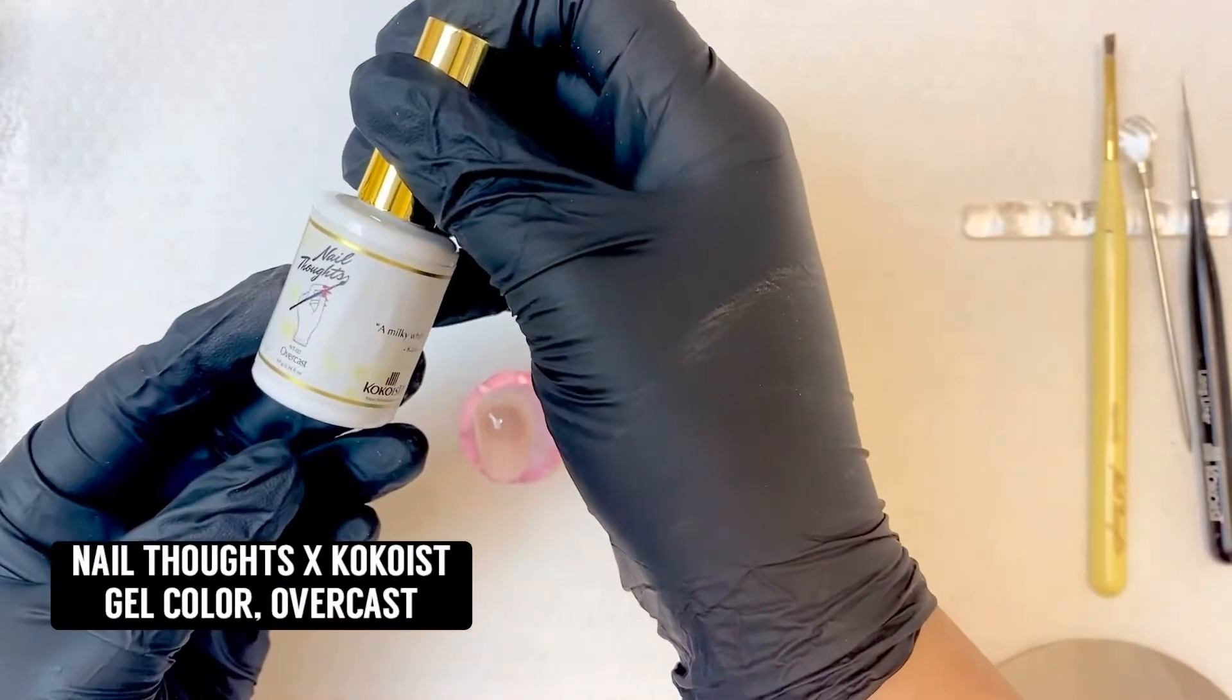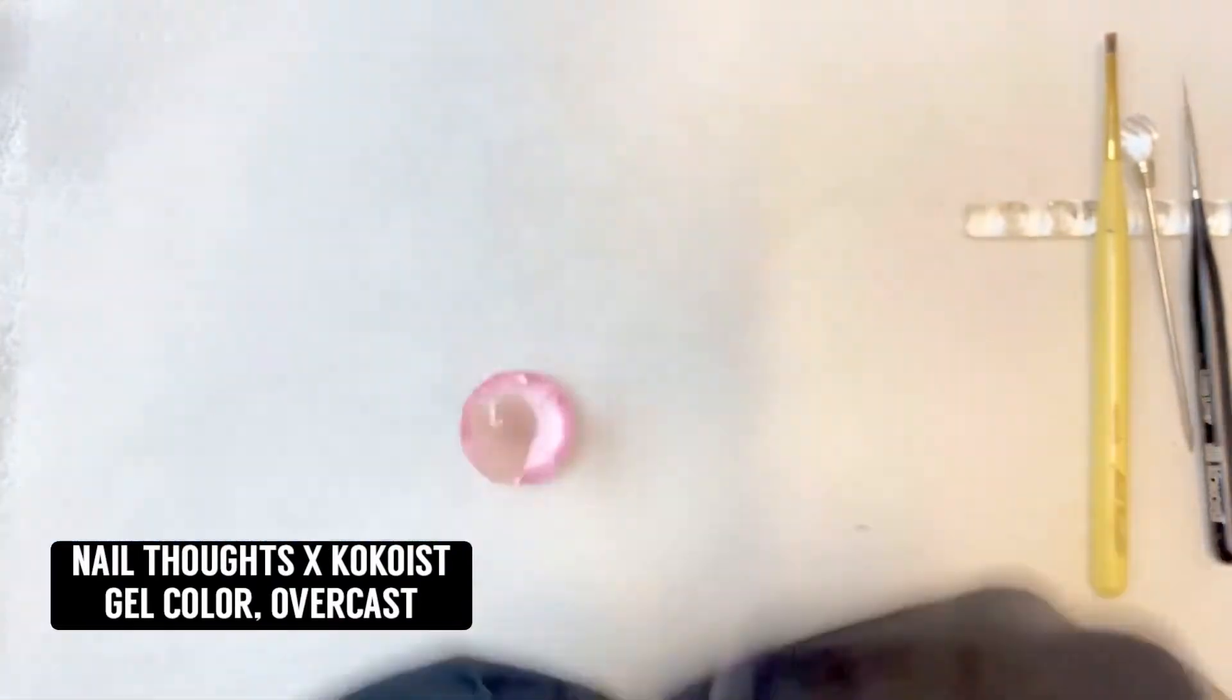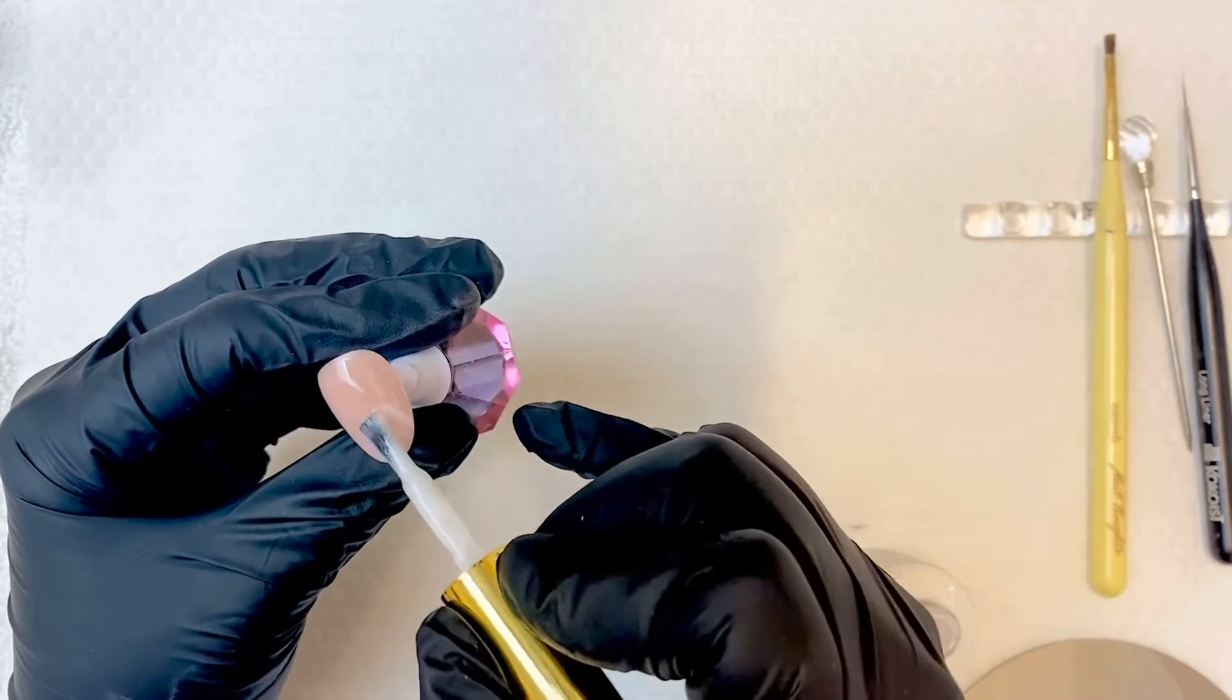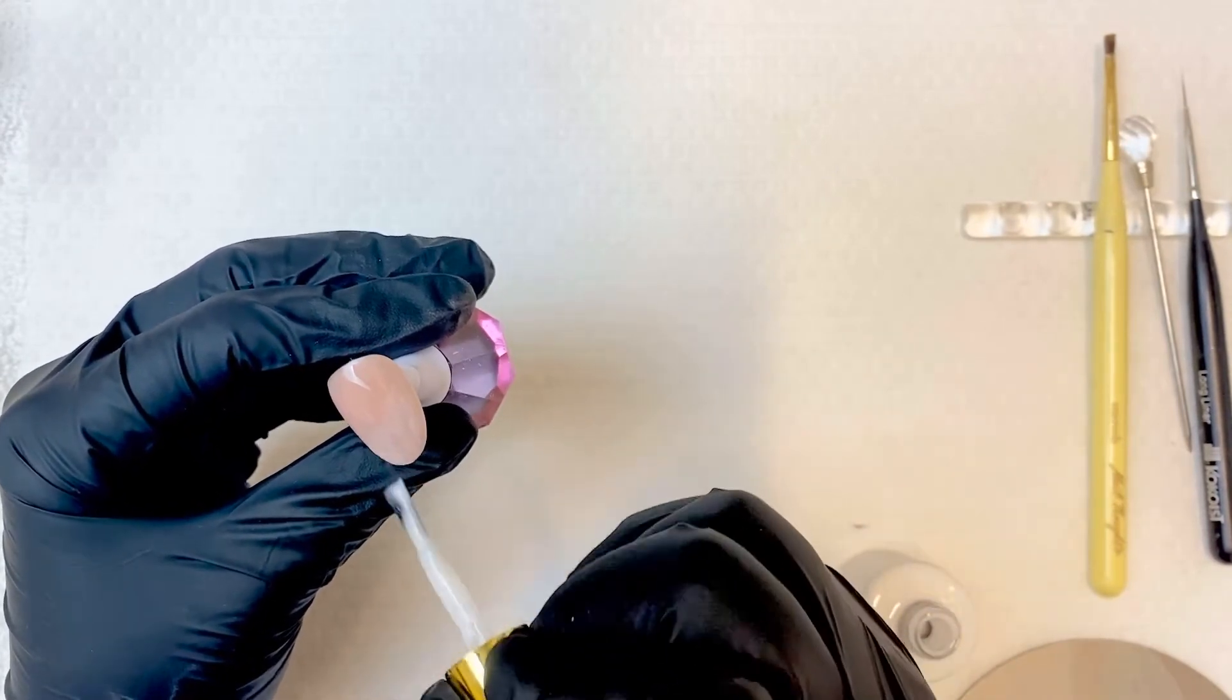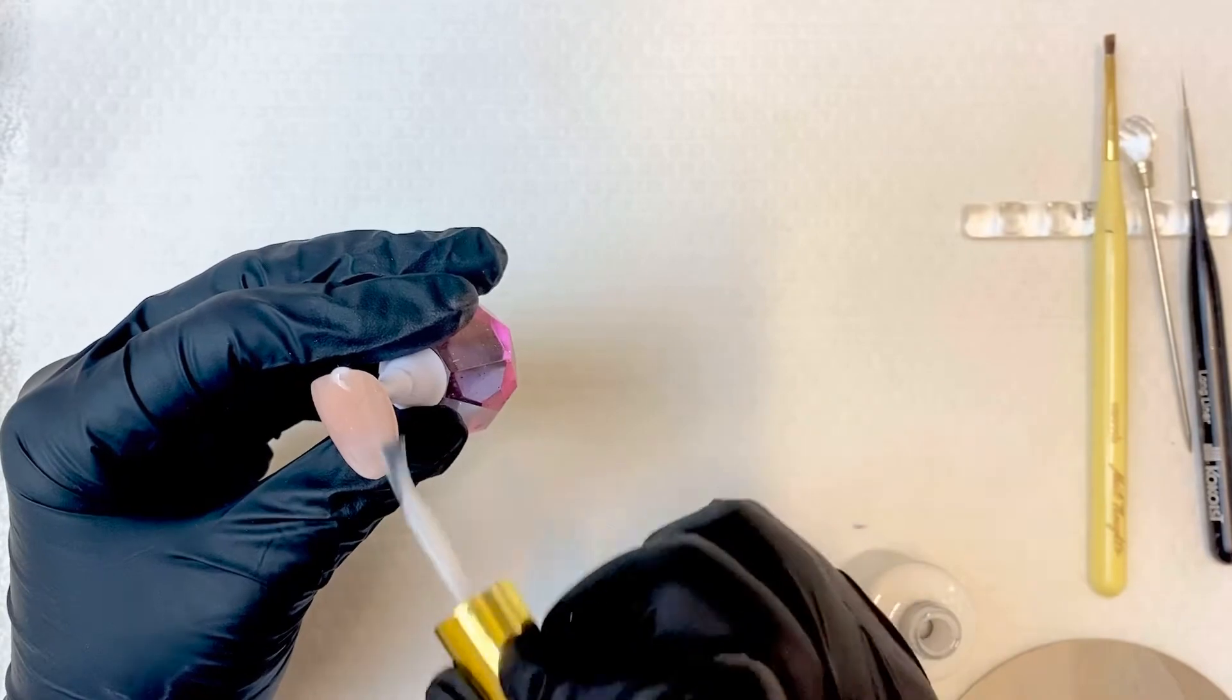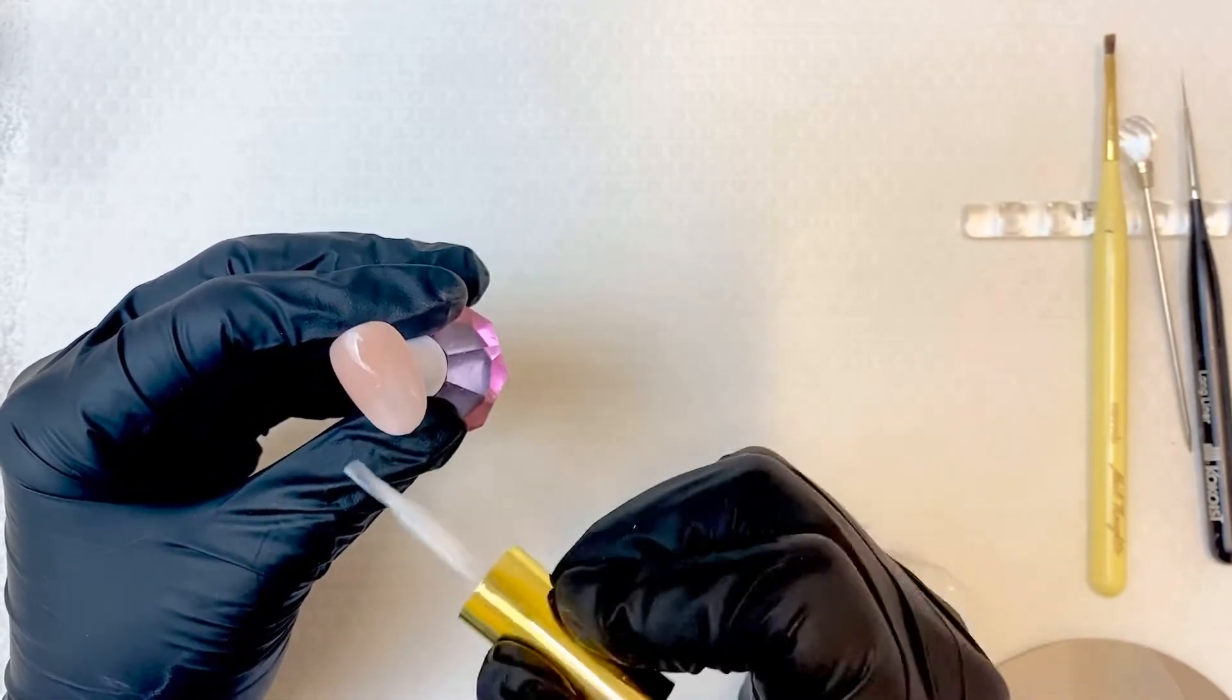After that's cured, we are going to sketch out the shape of our little agate using Overcast. Overcast is a really pretty sheer white. We're just going to use that to sketch out and create the shape that we want for the agate. One of my pro tips for creating a flow is if I start high on one side and low on the other side, I'll do the opposite on the other nail. So I have a really nice up, down, down, up kind of thing between nails.